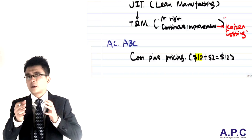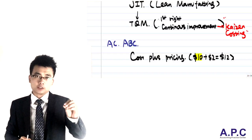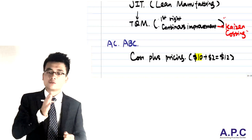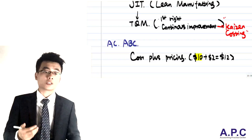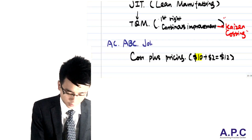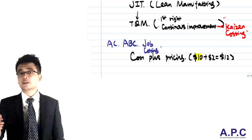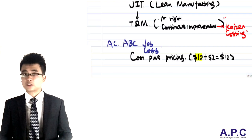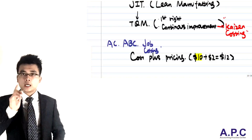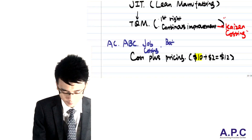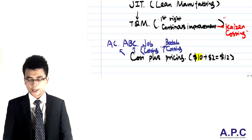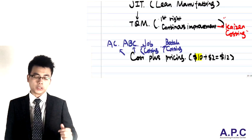If some customers are individuals whose demand is quite unique, we need to establish costs for each specific order. Hence, we're going to introduce something called the job costing method. Also, for some customers who want not just one particular order but maybe a batch — for example, 10 orders in one batch — we're going to have a look at batch costing as well. Those are the ways we are going to focus upon in setting up costs for each of these products.